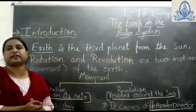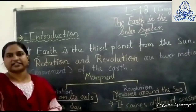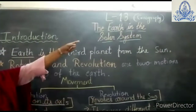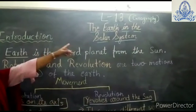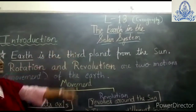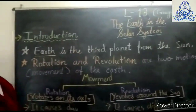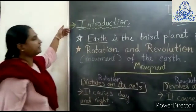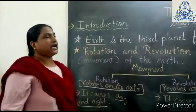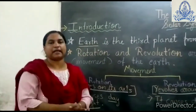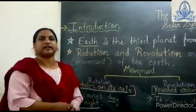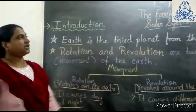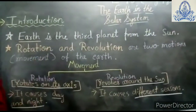We have already completed our chapter in history. Now we are taking chapter number 13 from geography: the Earth in the Solar System. First of all we go with the introduction part. We know that total 8 planets are in the solar system, and Earth is the third planet from the sun.